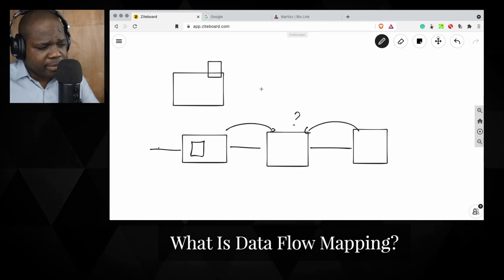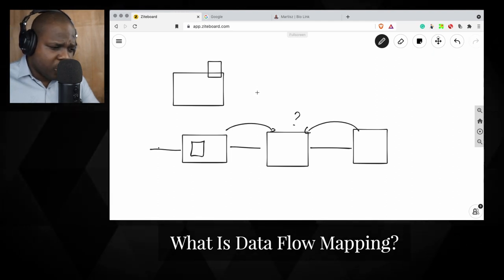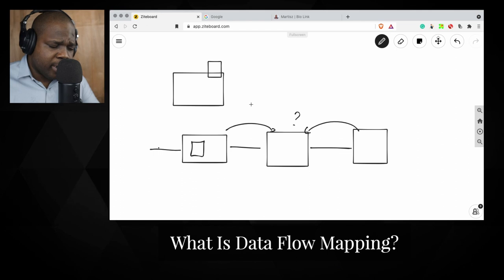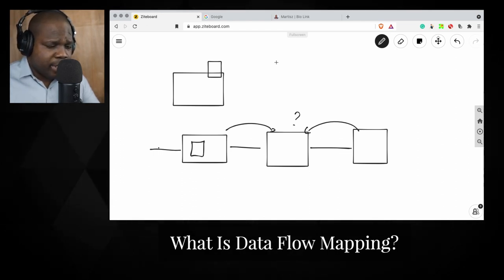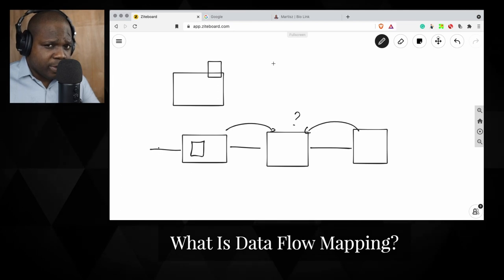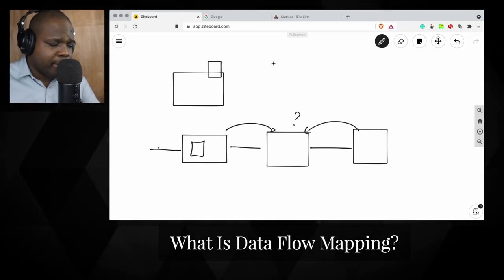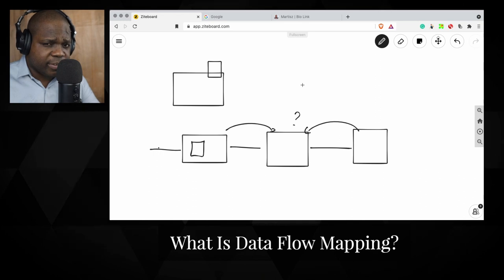So you can show people what will happen with the data when they request one or when they provide data. And sometimes you're required to do that. But with the data map flow, you can see where the data is going.